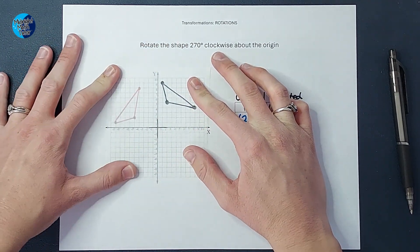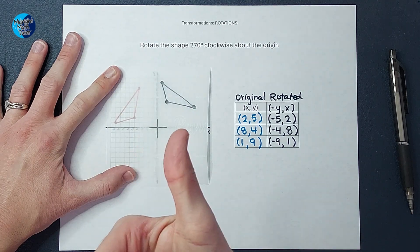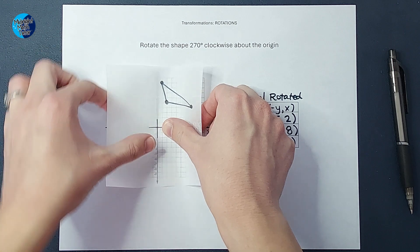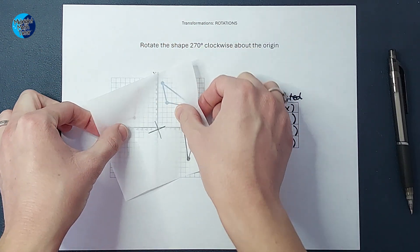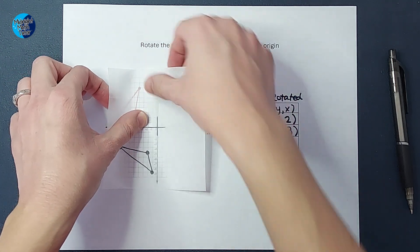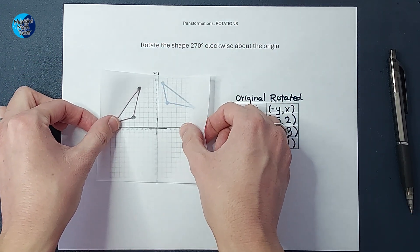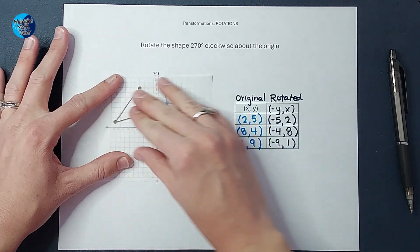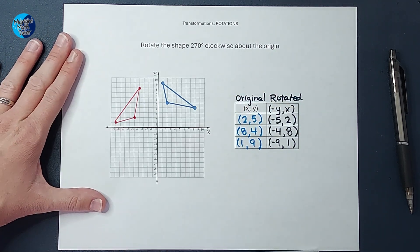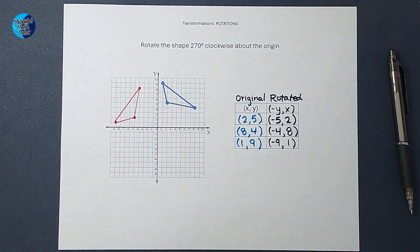Now I'm going to physically turn this paper 270 degrees clockwise about the origin. So there is 90 degrees, 180 degrees, and 270 degrees. And look at that. It lines up pretty nicely. So I'm feeling pretty confident that I did that correctly.